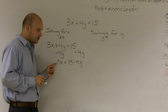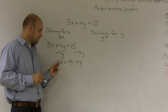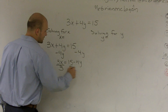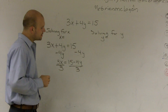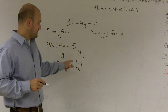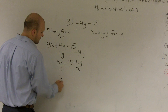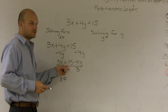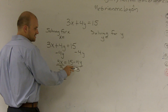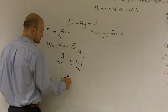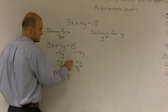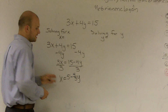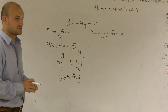Now I have multiplication by my variable — multiplication of 3 by my variable. To undo that, I need to divide by 3. Remember, you cannot combine 15 minus 4y. However, I get x equals — and I'm going to separate this into two different fractions. 15 divided by 3 reduces down to 5, and negative 4 divided by 3 I'll keep as negative four-thirds y. That would be my final answer for solving for x.